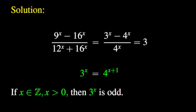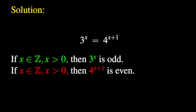Let us check if we can have integer solutions. If x is a positive integer, then 3 to the power x is odd, because 3 is odd and the product of odd integers is still an odd integer. If x is a positive integer, then 4 to the power of the quantity x plus 1 is even, because 4 is even and the product of even integers is still an even integer. Given that it is impossible to have an odd integer equal to an even integer, there are no positive integer solutions to the equation 3 to the power x equal to 4 to the power of the quantity x plus 1.